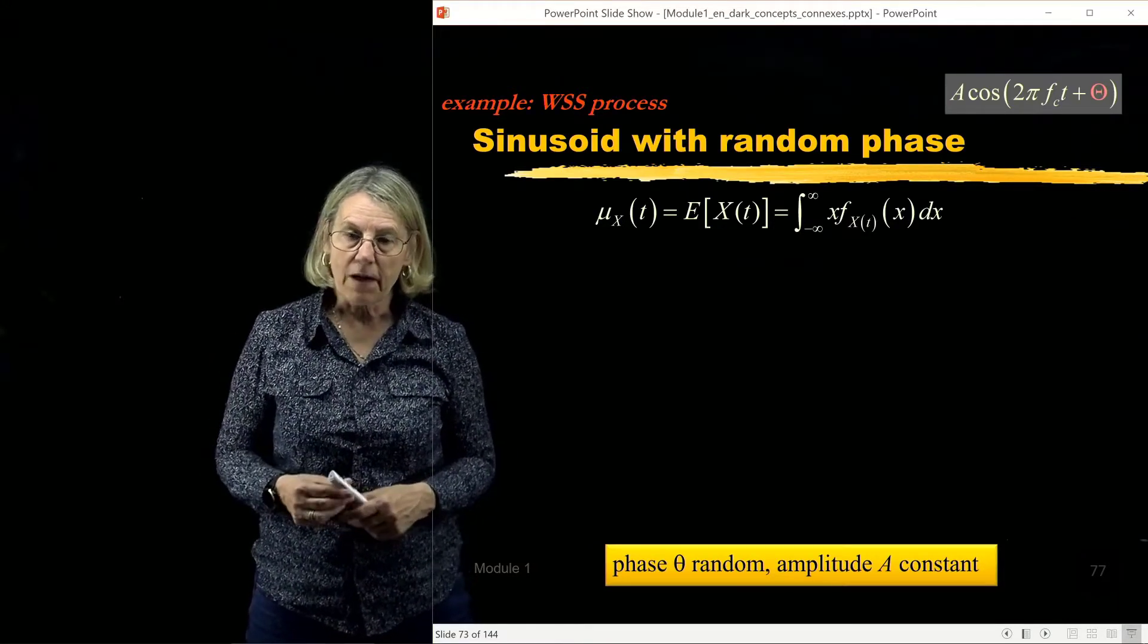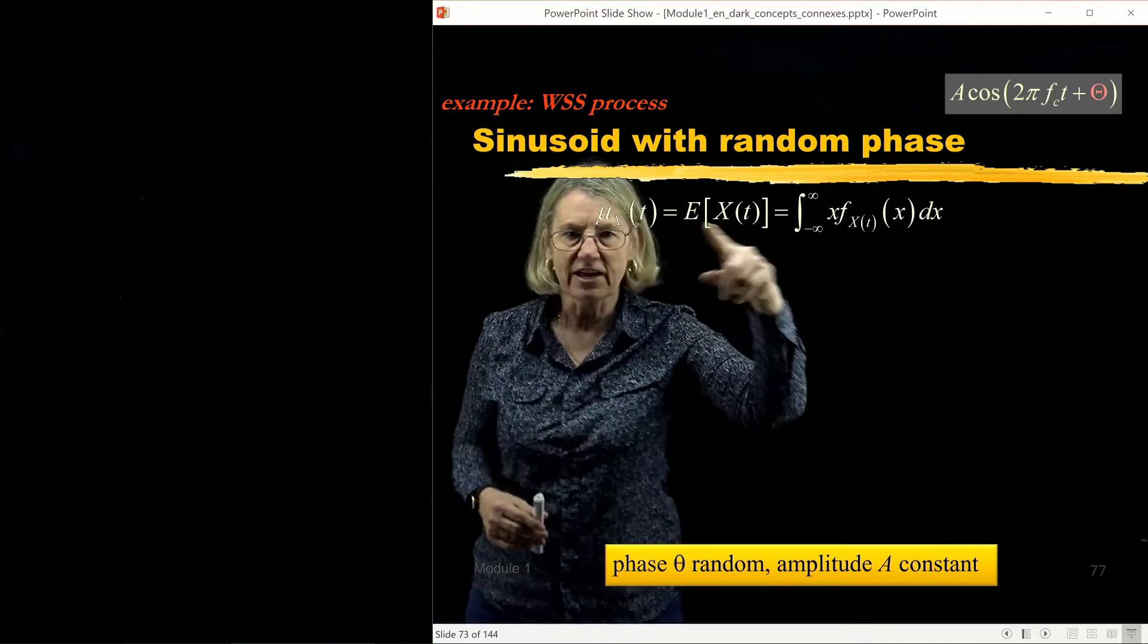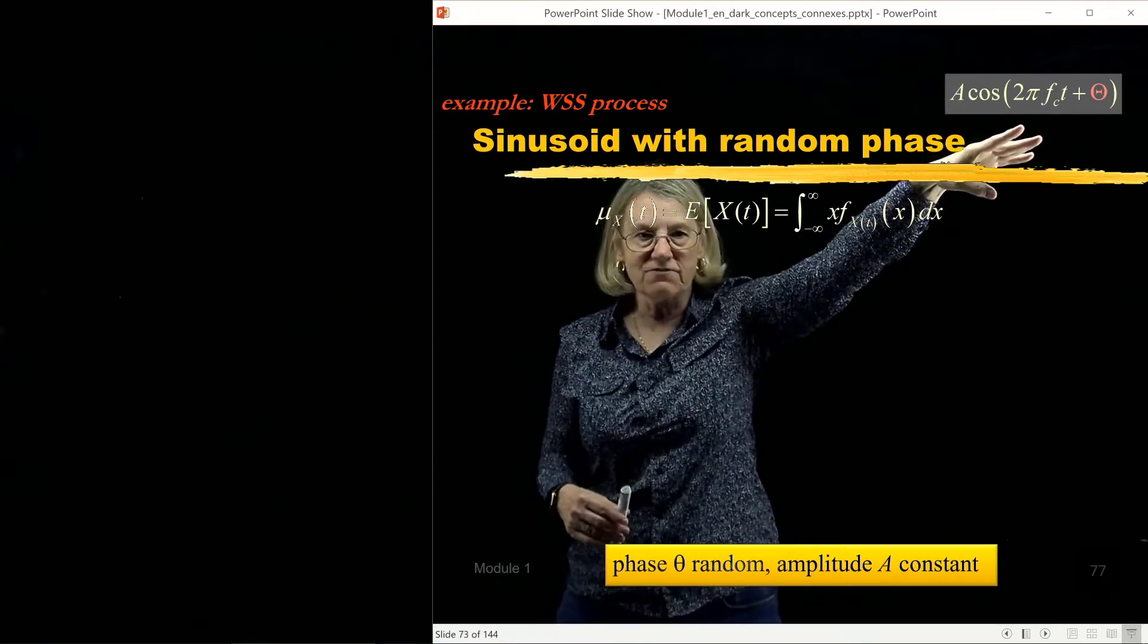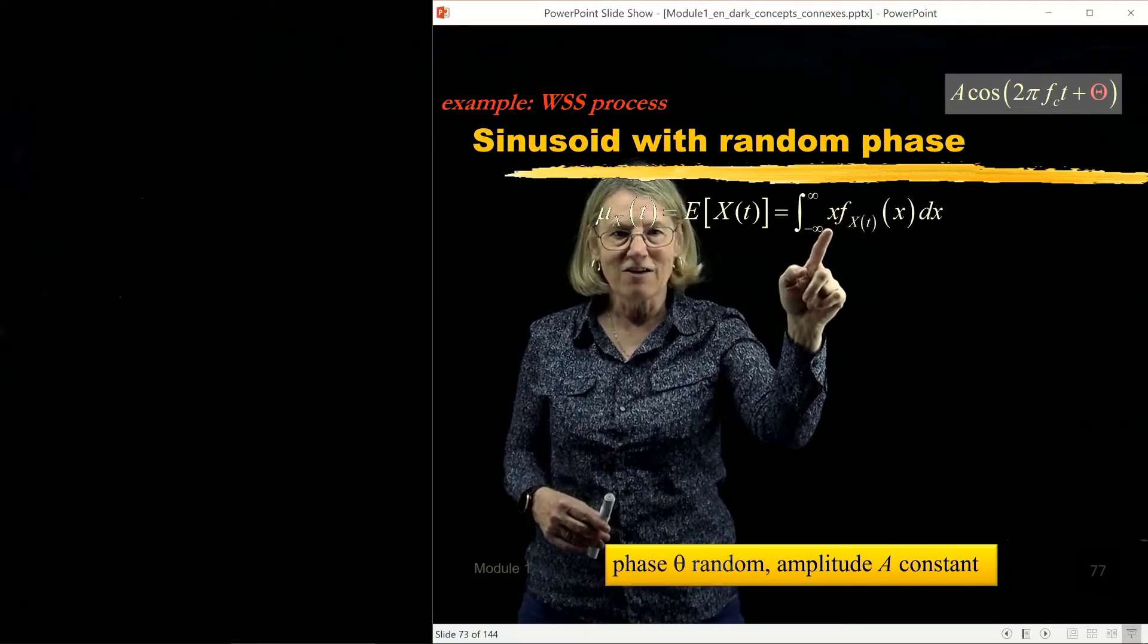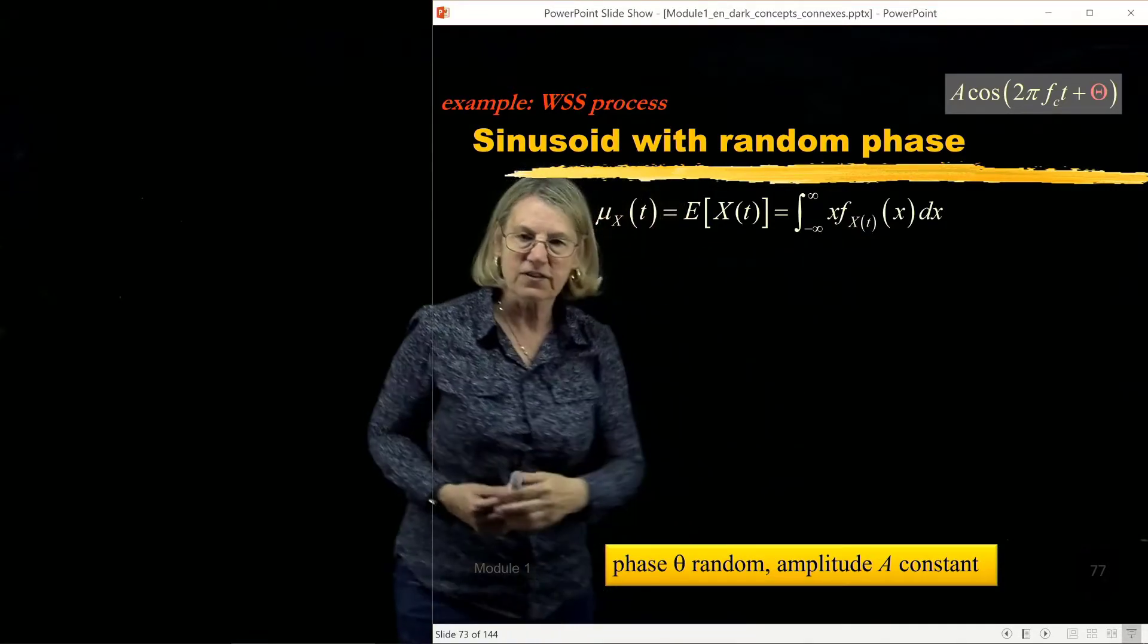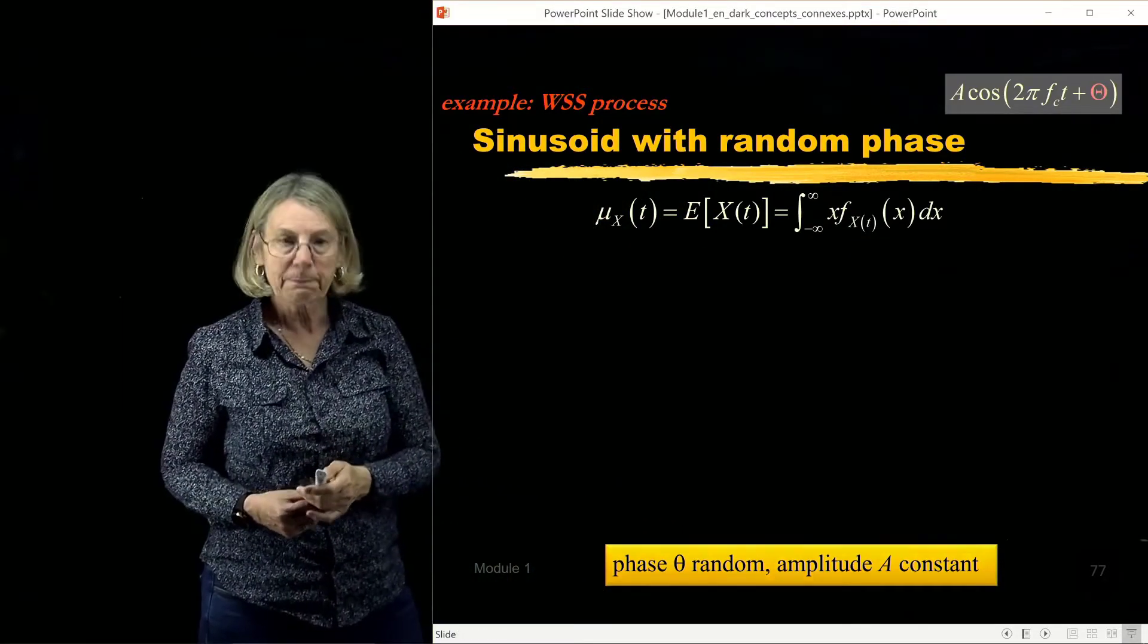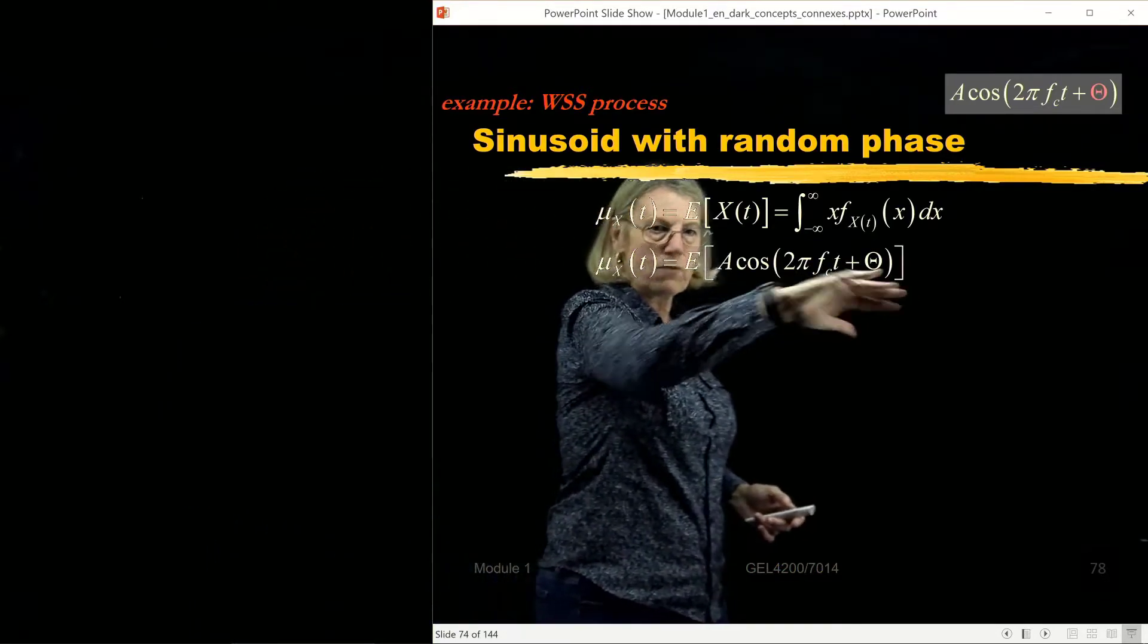So we'll start with the mean of this random process. By definition μ_x is the expected value of x. Here's my x, so I'm going to be putting that in for x and then of course it depends on what the density is for this random phase.